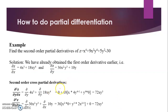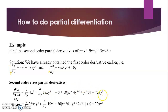For the cross partial derivatives, we differentiate dZ/dX with respect to Y. For 4X³ + 18XY⁴: 4X³ is constant with respect to Y so its derivative is 0. For 18XY⁴, using the product rule: X is constant, so 18 × X × derivative of Y⁴ = 18X × 4Y³ = 72XY³.